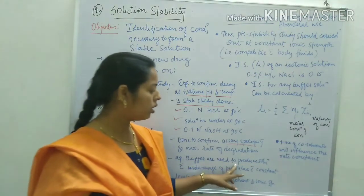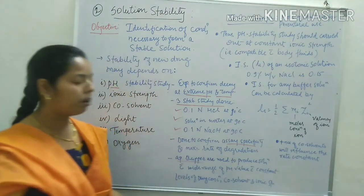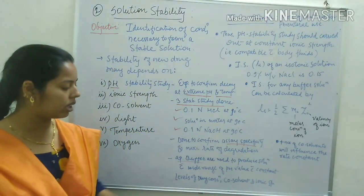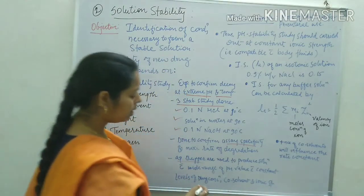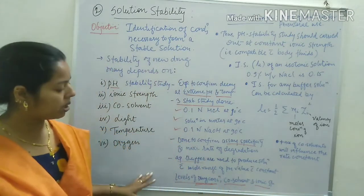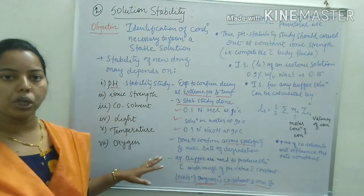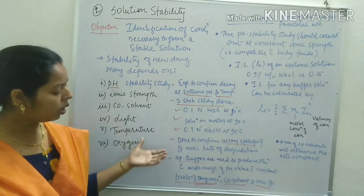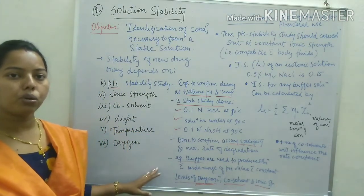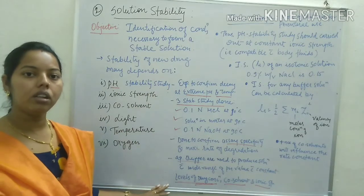Aqueous buffers are used to produce solutions with a wide range of pH values while keeping drug concentration, co-solvent, and ionic strength constant. By altering only the pH, we can determine the effect of pH on solution stability.